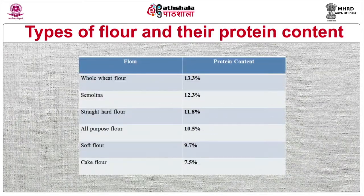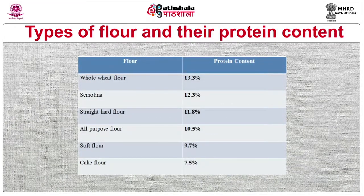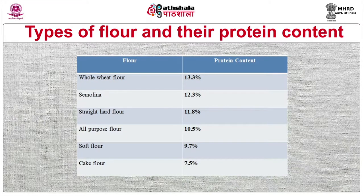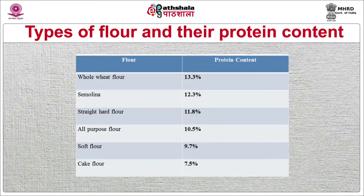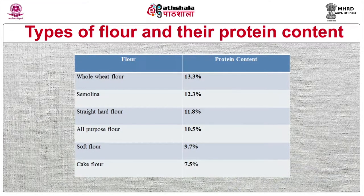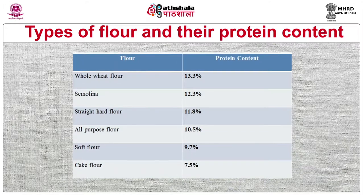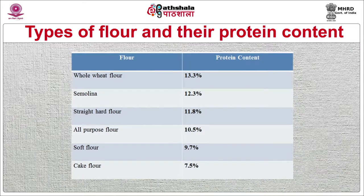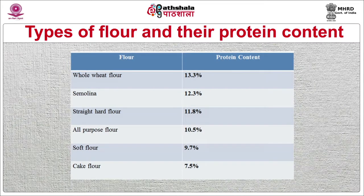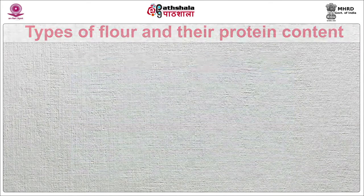Now we discuss the types of flour and their protein content. Whole wheat flour contains 13.3% protein, semolina 12.3%, straight hard flour 11.8%, all purpose flour 10.5%, soft flour 9.7%, and cake flour 7.5%.